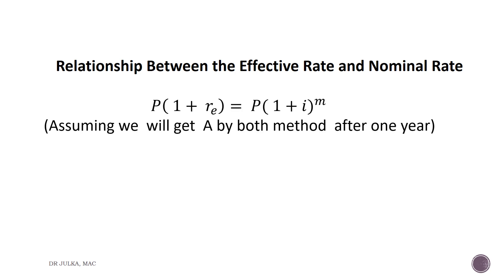To derive the formula for effective rate of interest, if we invest P rupees right now at effective rate of interest Re for 1 year, we will get P into 1 plus Re after 1 year. Similarly, if we invest P rupees at a rate of interest R compounded m times in a year, the value after 1 year is P multiplied by 1 plus i, raised to the power m.